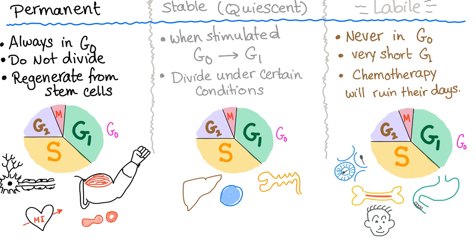Permanent cells are always resting; they do not divide. Examples: neurons, heart muscle cells — once you have a myocardial infarction, it is almost impossible for it to recover. Also muscles and mature red blood cells. The hematopoietic stem cells of the bone marrow are labile and can regenerate, but the mature red blood cells are permanent: once you have them, they stay for about 120 days, then the spleen destroys them. During those 120 days, mature red blood cells do not divide.